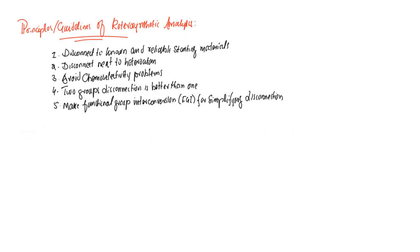Here I have enlisted some important principles or guidelines with respect to retrosynthetic analysis. Whenever we perform retrosynthetic analysis of any particular molecule, we should keep these principles in mind so that we could get to the starting material in an appropriate scientific way. The first principle concerns disconnection: the disconnection should be made to known and reliable material. Only known and reliable starting materials that are available on a commercial scale should be obtained. If we obtain something that is not available commercially or cannot be made through simple organic reactions, then we should avoid such retrosynthetic analysis.